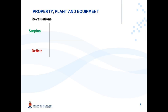If your first revaluation is a deficit, that deficit will be taken as an expense through profit or loss — you credit the asset account and debit revaluation deficit through profit or loss. If you subsequently have a revaluation surplus on the same asset, the asset increases again, giving you a debit against the asset account. For the credit, you first reverse any previous deficits recognized in profit or loss — so your first credit entry goes against profit or loss as revaluation surplus / other income.